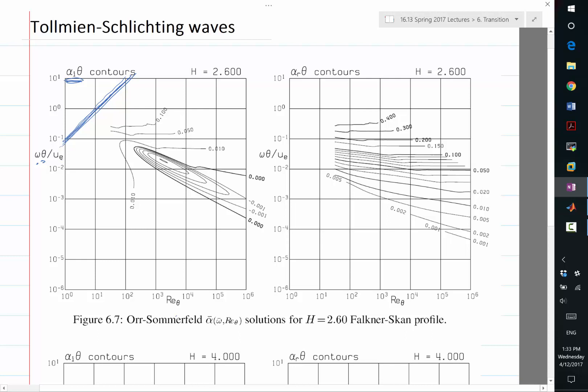That frequency is basically non-dimensionalized by u_e squared divided by nu, equal to 0.1 times u_e squared divided by nu. So that's the frequency of this line.